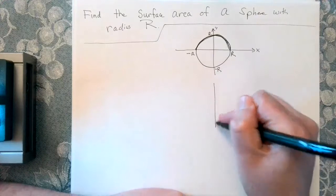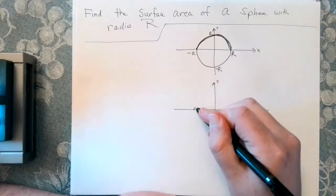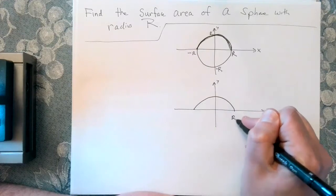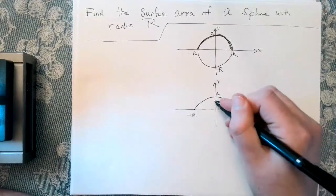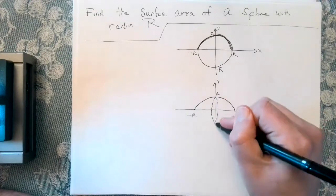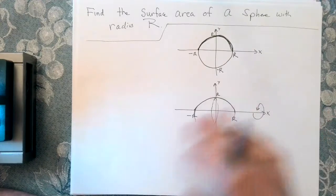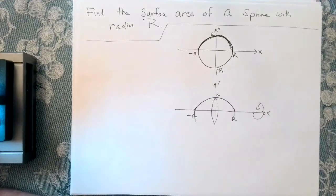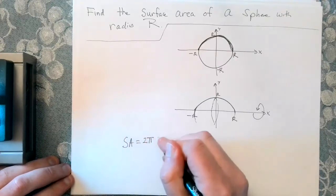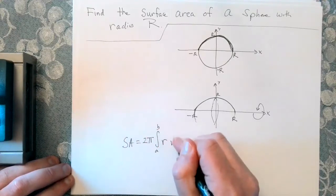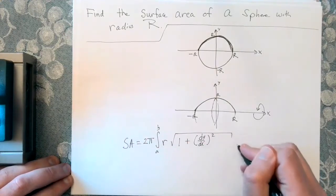So let's take the top half, and let's spin it around the x axis. So that's going to sort of generate my sphere. Let's sort of imagine that. So that would make my sphere, and I want the surface area of that sphere. So let's think about this. So surface area is equal to 2 pi times the integral from a to b of r times the square root of 1 plus dy dx quantity squared dx.